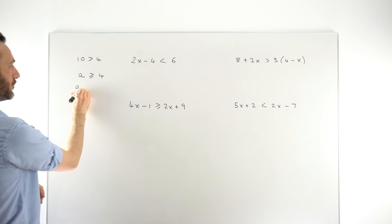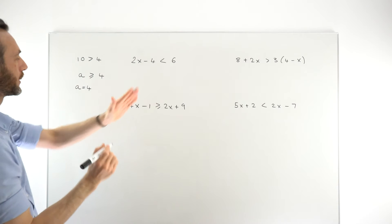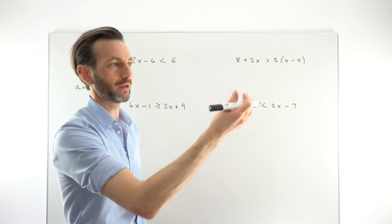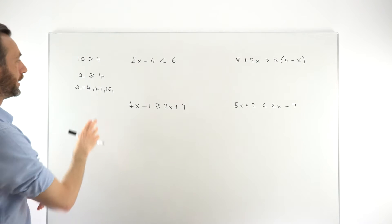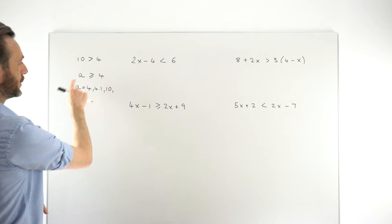What does that mean? Well, that means that a can be 4, it's allowed to be 4, but it also can be any number bigger than 4. So it could be 4.1, or it could be 10, or it could be a million, or any number bigger than or equal to 4. But again, reading that right to left, 4 is less than or equal to a.